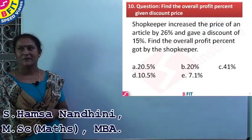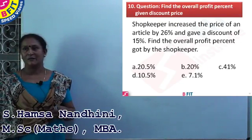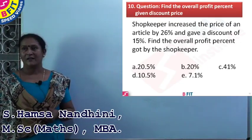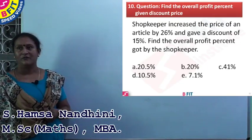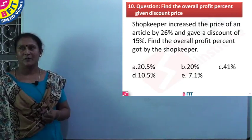Question number 10. Shopkeeper increased the price of an article by 26% and gave a discount of 15%. Find the overall profit percent got by the shopkeeper.